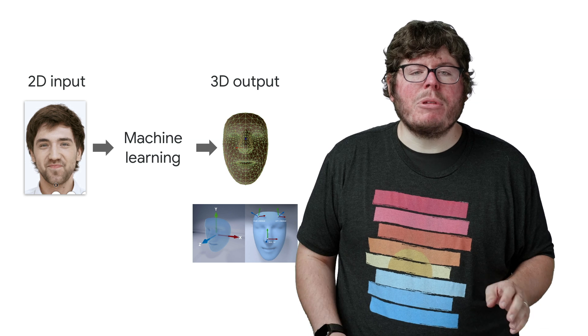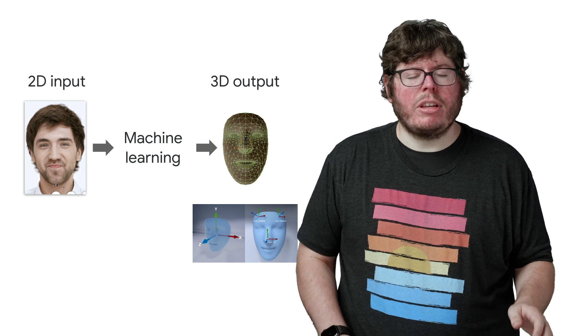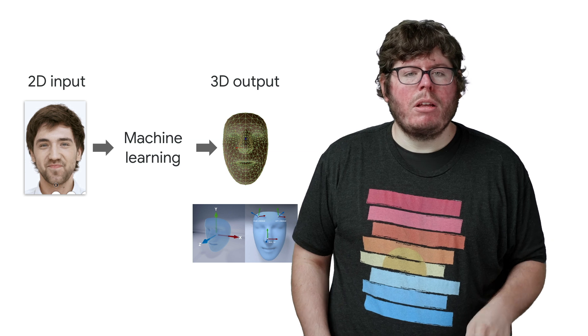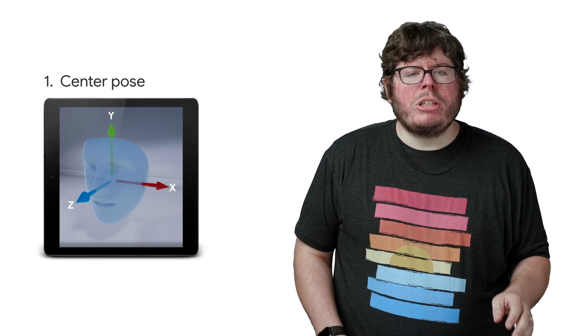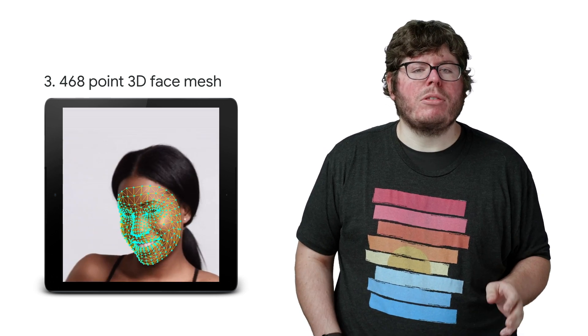It uses the phone's camera and machine learning to provide three pieces of information synchronized with the camera feed. First, a center pose for the face, which helps you do things like render a hat. Second, region poses, which are useful for placing assets on or near the forehead and nose. And third, a 468-point 3D face mesh, which allows you to paint detailed textures that accurately follow facial movements.